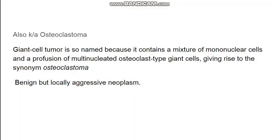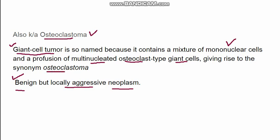Giant cell tumor is a benign tumor of bone. Its origin is unknown, and it is a locally progressive, locally aggressive neoplasm. It is also known as osteoclastoma. Morphologically, it contains a mixture of mononuclear cells with many interspersed multi-nucleated giant cells. These giant cells are osteoclast-type and are multi-nucleated, which is the basis for both names: giant cell tumor and osteoclastoma.